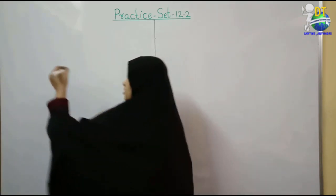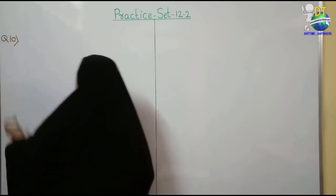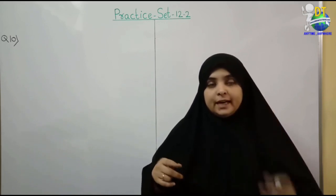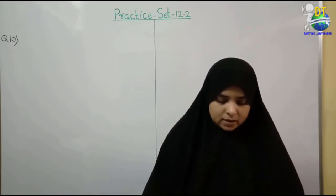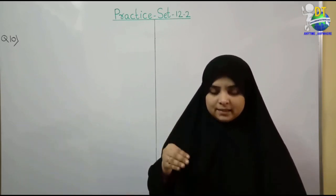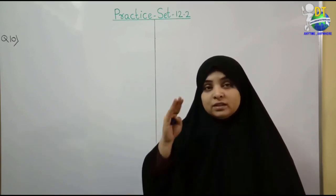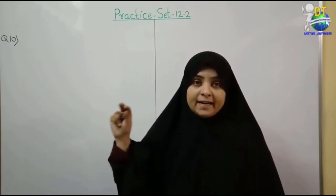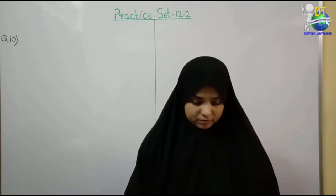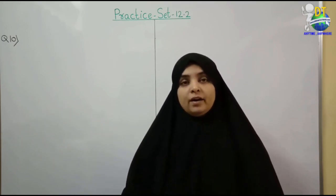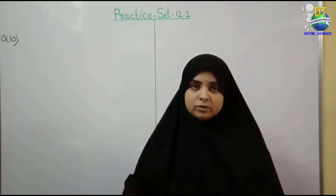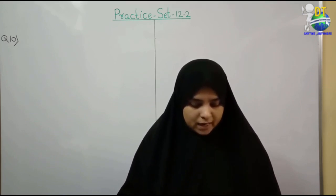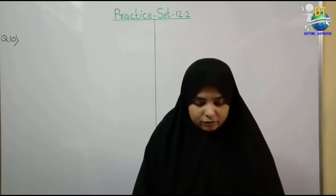Okay student, last question number 10. What is the question, student? Present age — again information about age. Student's present age is five more than three times the age of Viru. Anil's age is half of Sudhir. If the ratio of the sum of Sudhir's and Viru's age to three times Anil's age is 5 is to 6, then find Viru's age.